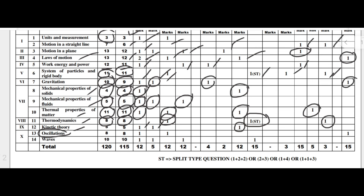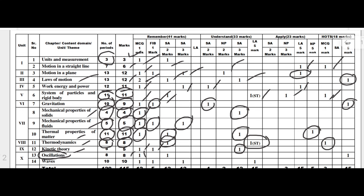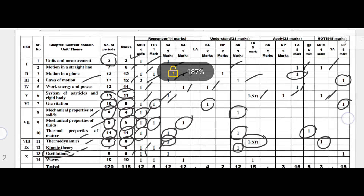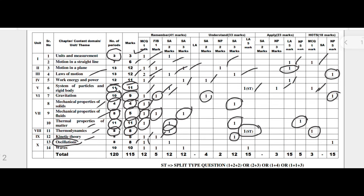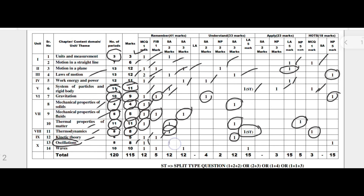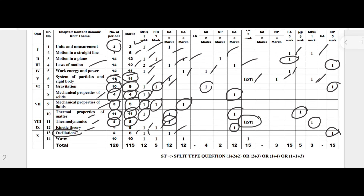Oscillations has eight teaching hours and eight marks. The distribution includes one MCQ, one two-mark type question, and one numerical problem which carries five marks, totalling eight marks. The last chapter is Waves — ten teaching hours and ten marks.